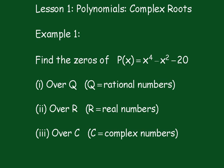In the first example, we have to find the zeros, or the roots, of the polynomial x to the fourth minus x squared minus 20. Firstly, over the rational numbers Q, over the real numbers R, and the complex numbers C.